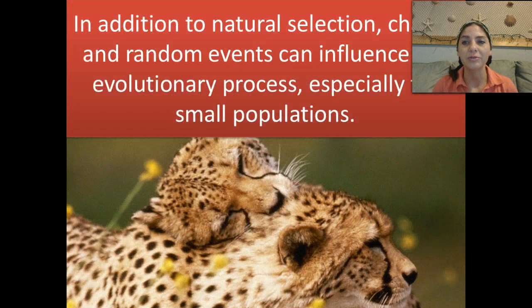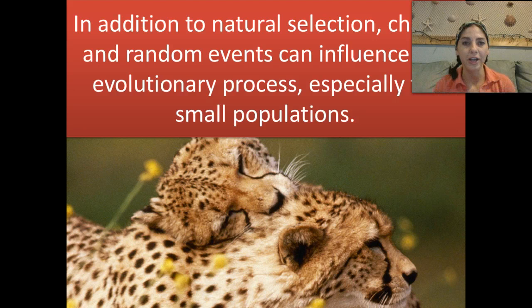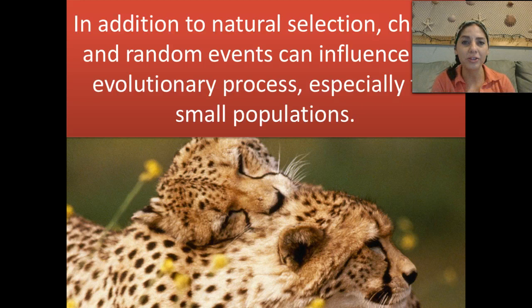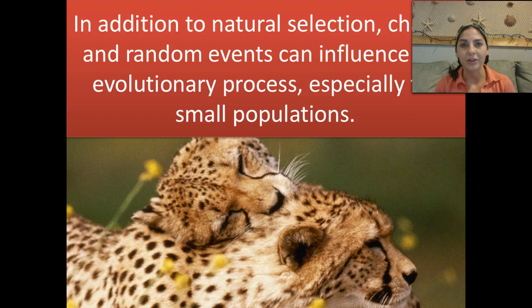In addition to natural selection, chance and random events can also influence evolutionary processes, especially for very small populations. If we have a really small population and something drastically changes — for example, a population of ten little furry cute bunny rabbits in a forest — if a tree gets cut down and falls and takes out one rabbit, we just took out ten percent of that population and ten percent of the gene pool. That's going to have a very drastic effect, and that's one of those random events that could influence evolutionary process.